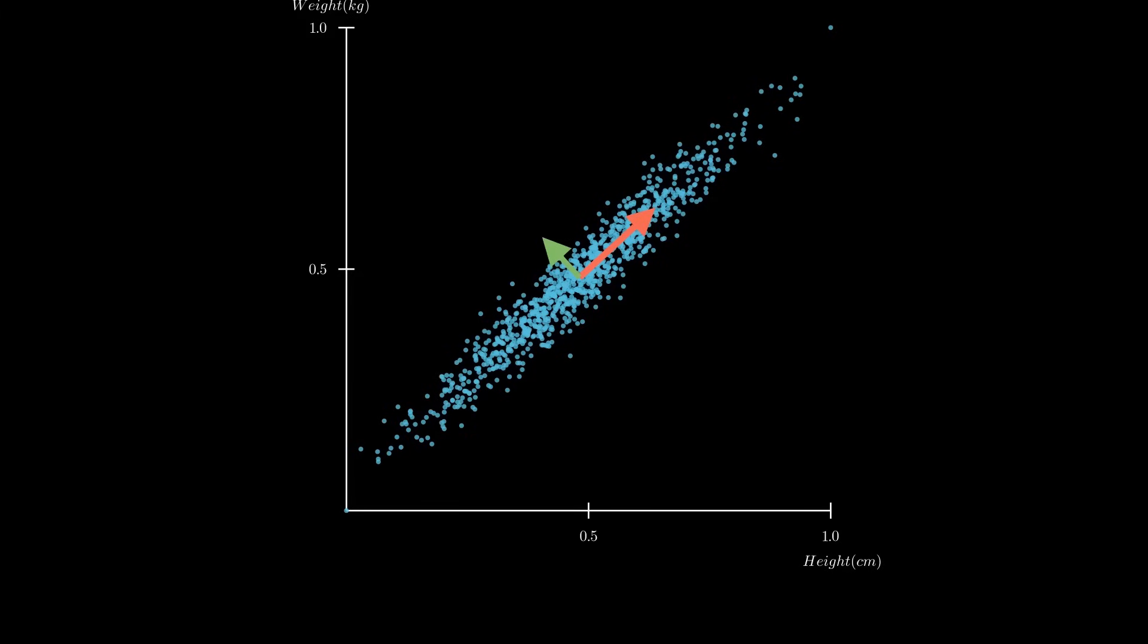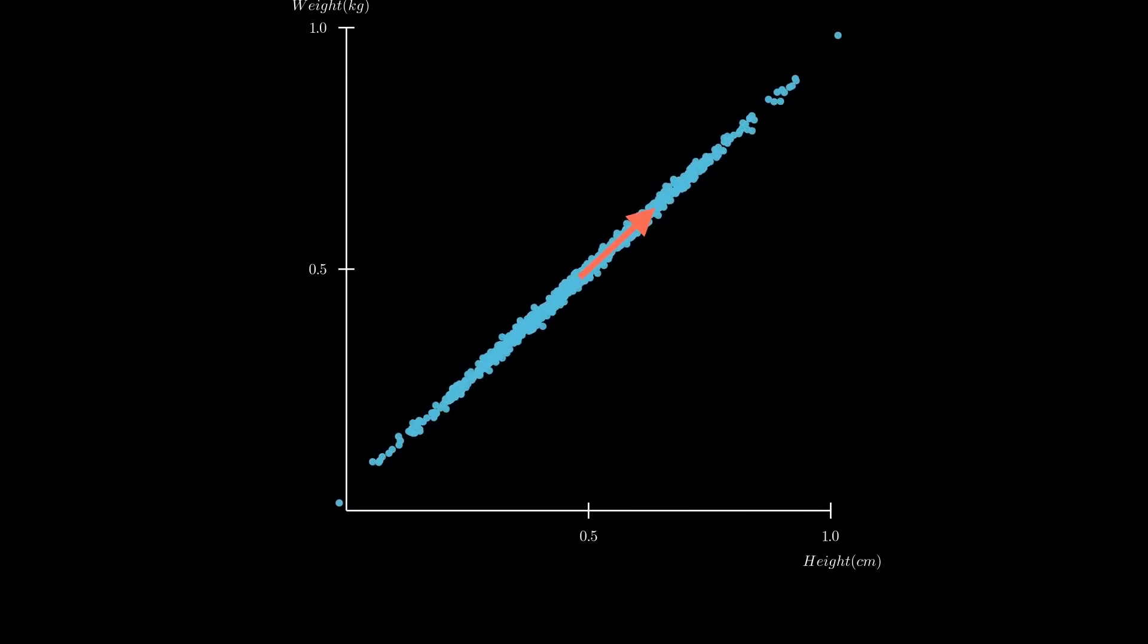Now, suppose we want to represent this 2D data on a single axis. One way to do it is to project the data onto the largest principal component, which is the axis given by the red arrow. And here is the final 1D graph representing our population.